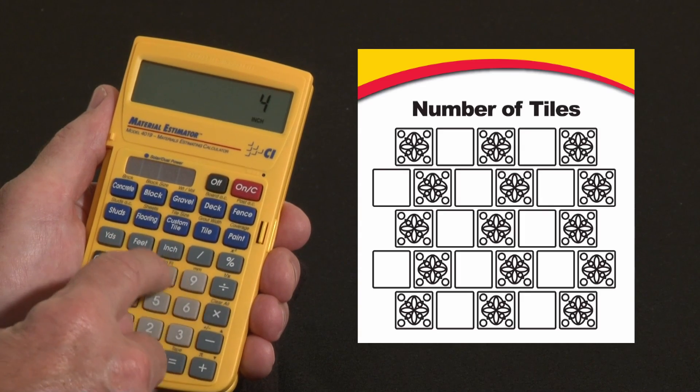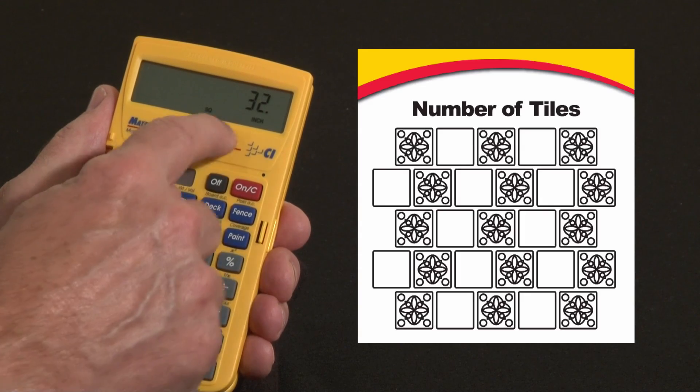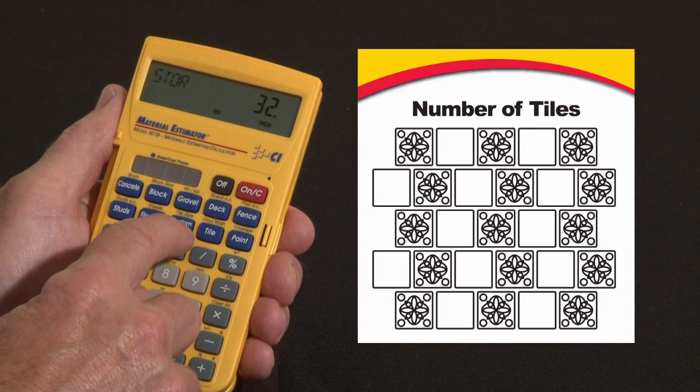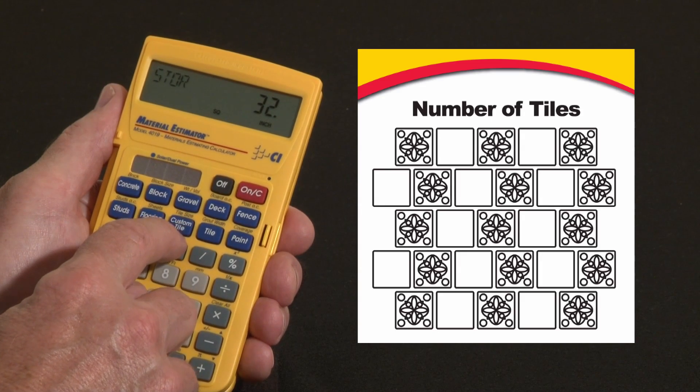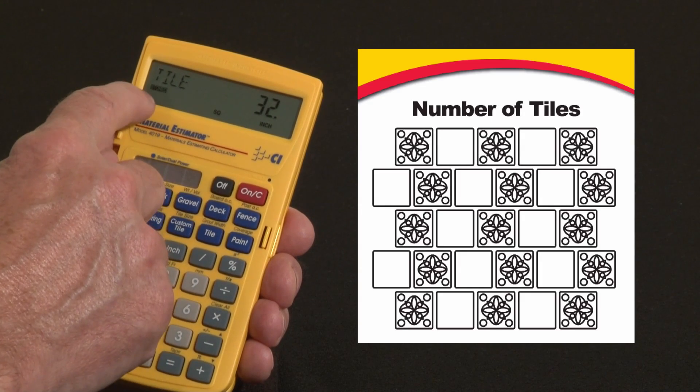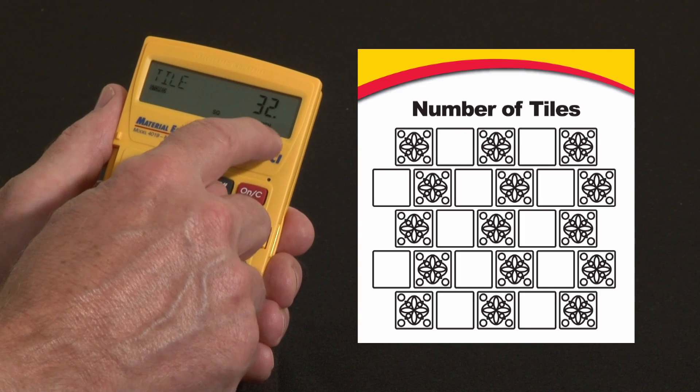So 4 inch by 8 inch equals 32 square inches. I want to store that as my custom tile size. Above the custom tile key it says tile size, so now it says tile stored is 32 square inches.